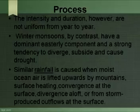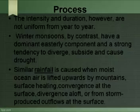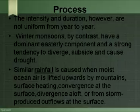Similar rainfall is caused when moist ocean air is lifted upwards by mountains, surface heating converges at the surface and diverges aloft, or from storm-produced outflows at the surface. However the lifting occurs, the air cools due to expansion in lower pressure and this produces condensation.